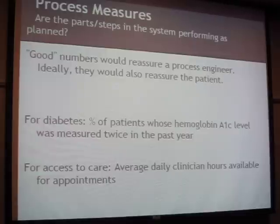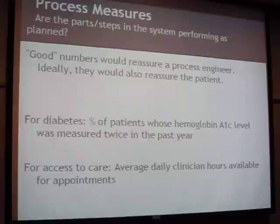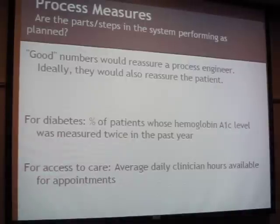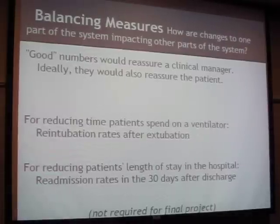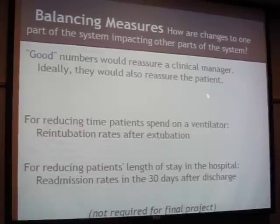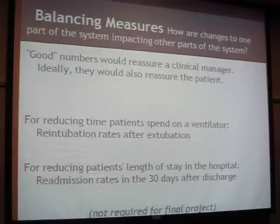For access to care, you could look at the average number of hours a clinician is available for appointments. If the problem is patients waiting too long for appointments, you could measure whether your doctors are working all day and how much of their time is actually available to schedule. Then balancing measures - things that would please a clinical manager - look at making sure a change in one part of the system doesn't screw up another part of the system.